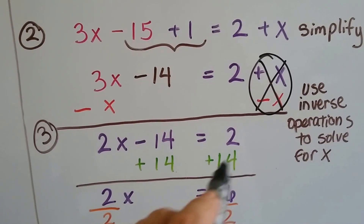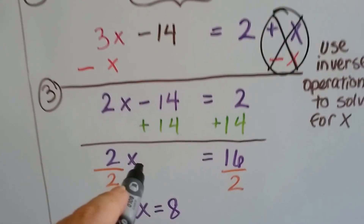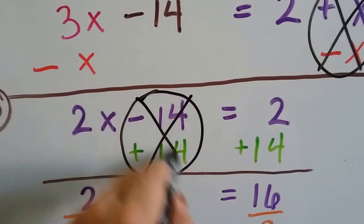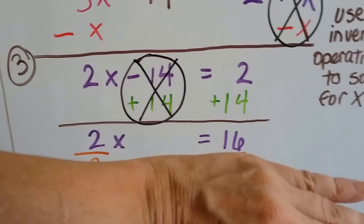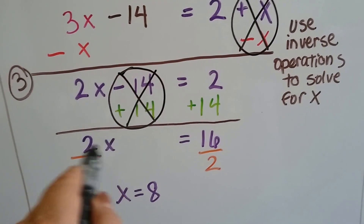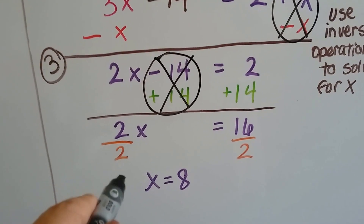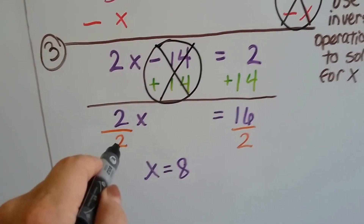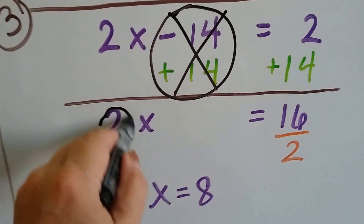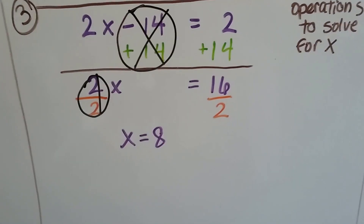Now we can add 14 to both sides. Because this is a minus 14, we can add 14 — that's going to get rid of it and create a zero pair. Now our equation says 2x equals 16. Because 2x is a multiplication problem, we can use division to isolate x. 2 divided by 2 creates a 1 — there's our friend, the invisible 1. We have 1x equals 8.